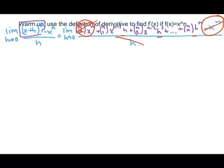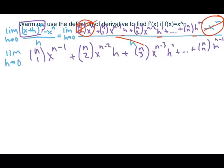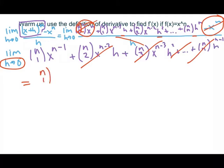I'm going to rewrite my new simplified limit — I no longer have a denominator. Looking at each of these terms, I'm looking for the limit as h approaches 0. Every single term besides the first term has an h in it. Therefore, as h approaches 0, all of those terms are approaching 0. So what I'm left with is that this limit as h approaches 0 is equal to n choose 1 times x to the power of n minus 1.